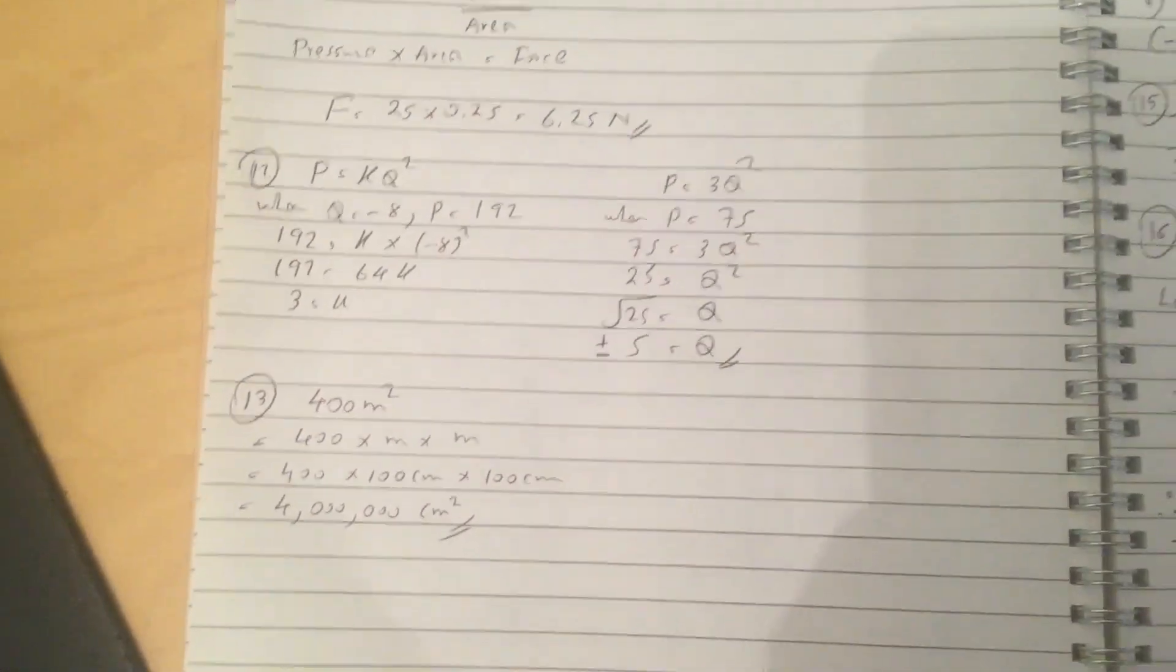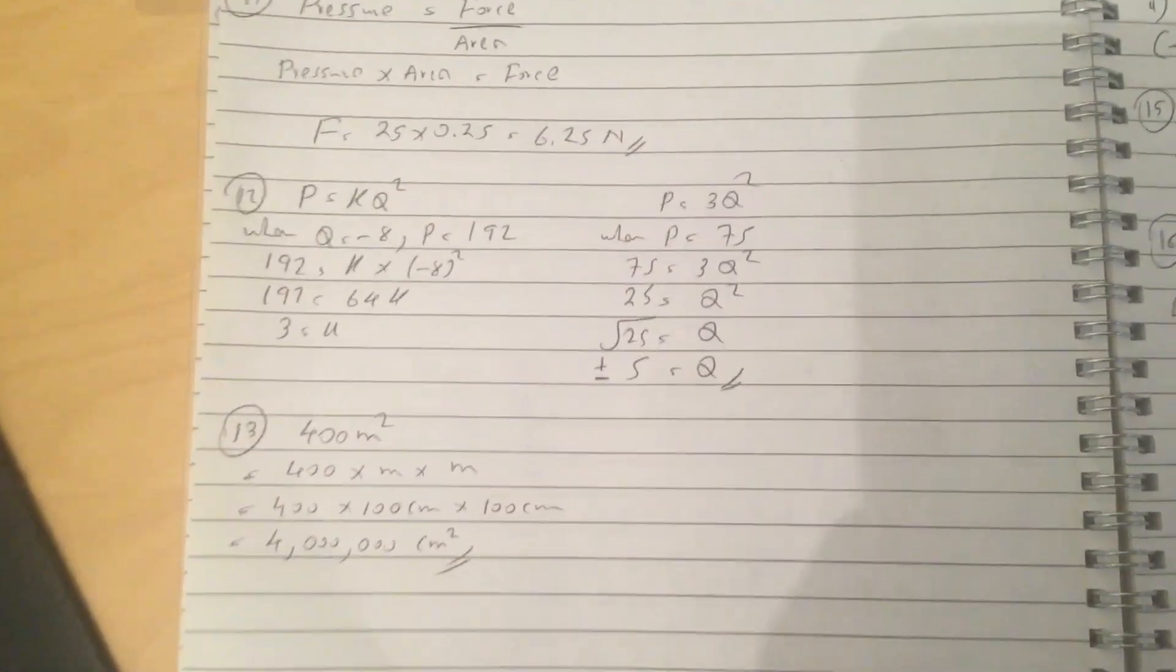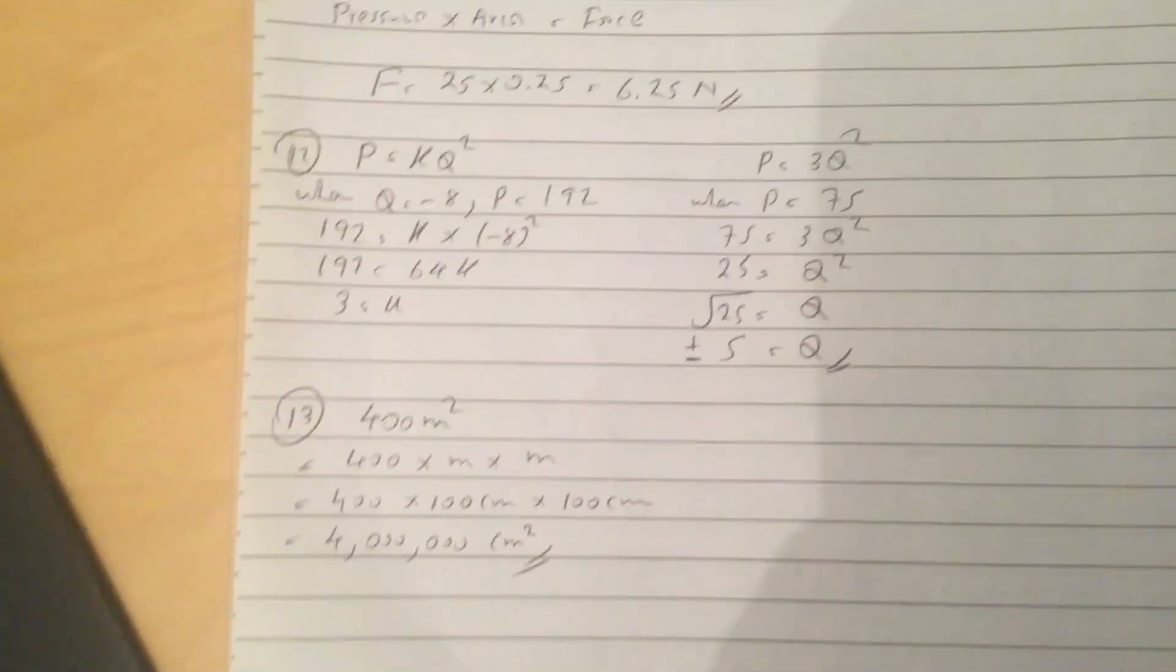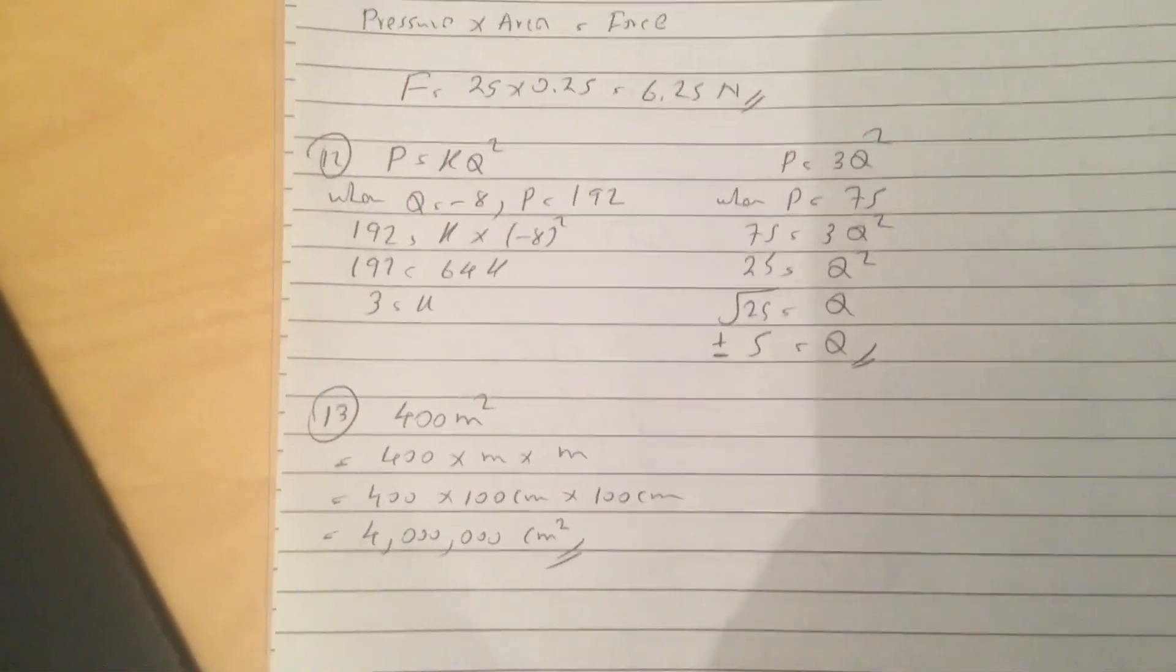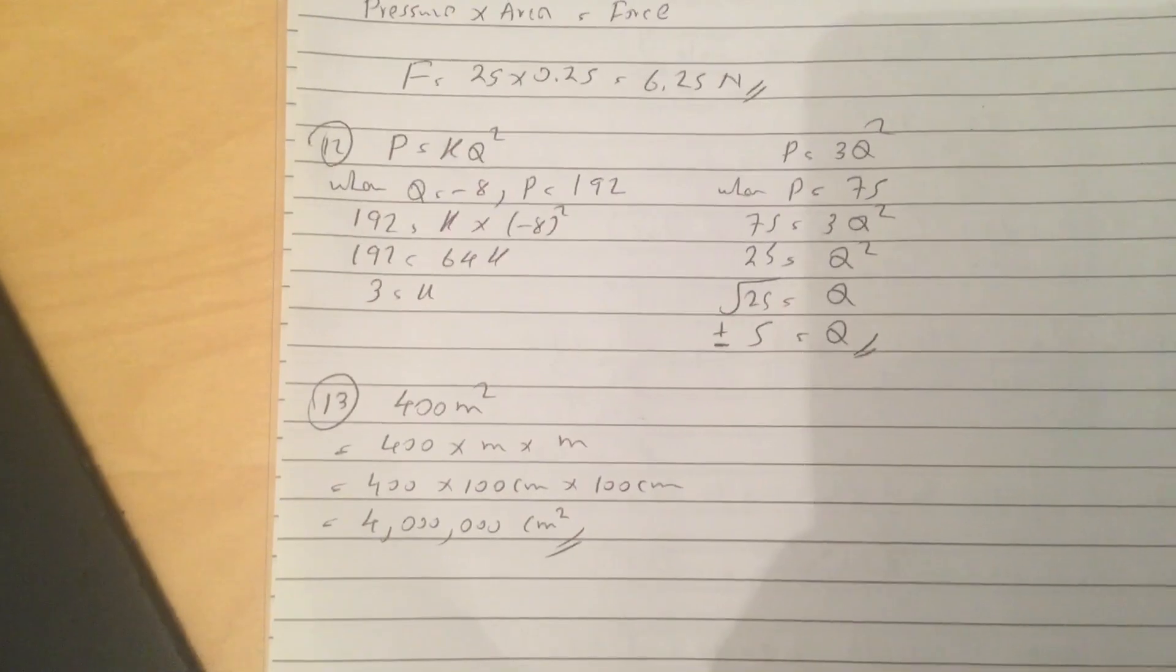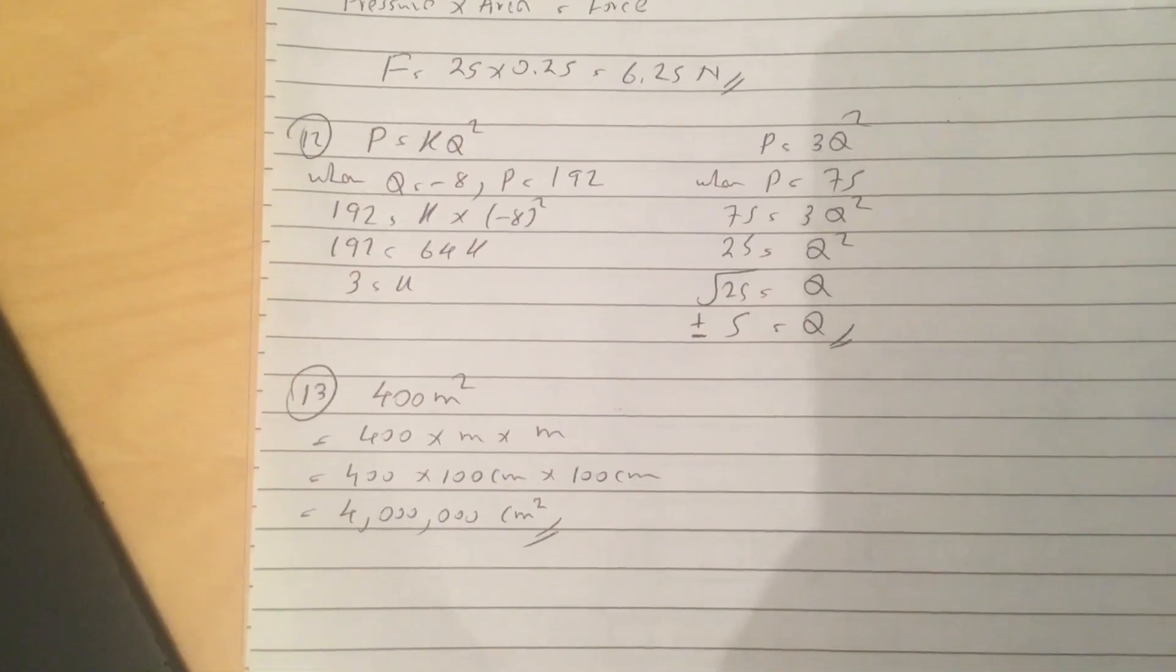Question 13. So 400 meters squared is same as, so this is the way I do it, so I write it as 400 times meter times meter, which is same as 400 times 100 centimeters times 100 centimeters, which is 4 million centimeters squared.